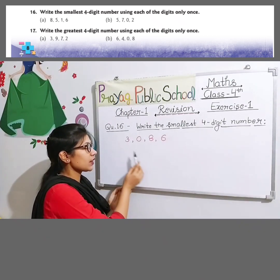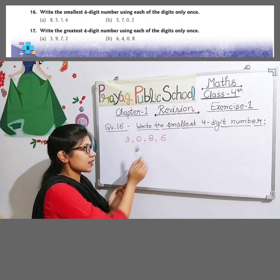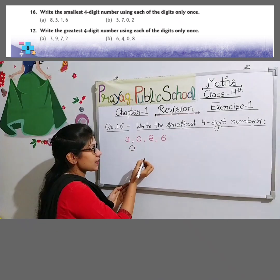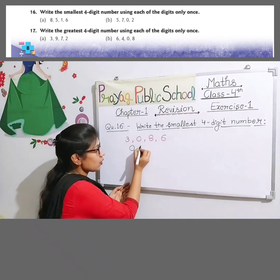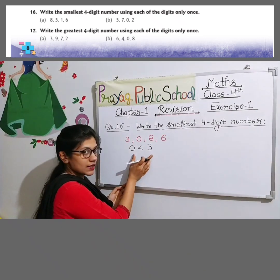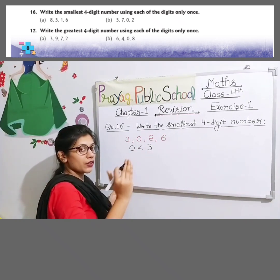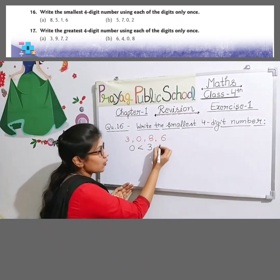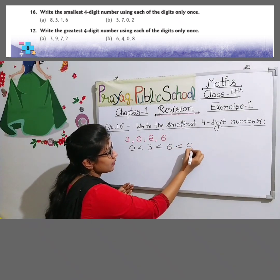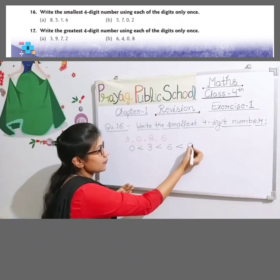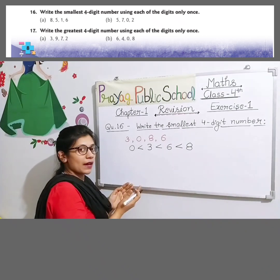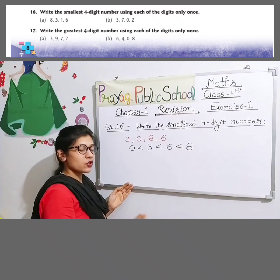Yahan humein kaun-kaun se digits given hain? 3, 0, 8, 6. Sabse chhota digit hai 0, to hum 0 likhenge pehle. 0 se bada kaun sa digit hai? 3. To 0 aur 3 ke beech mein greater than sign rahega, because 3 is greater than 0. Is tarah hum ascending order mein likhenge: 0, 3, phir 6, aur sabse bada 8. Humne diye hue digits ko arrange kar liya ascending order mein. Ab hum inhi digits ko ek row mein likh denge — wo hamara smallest 4-digit number ho jaayega.